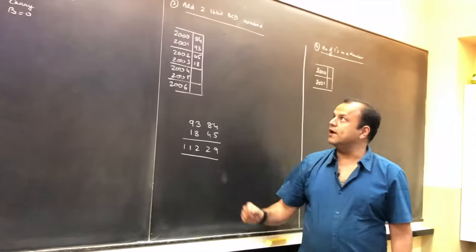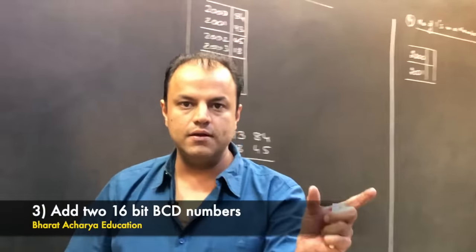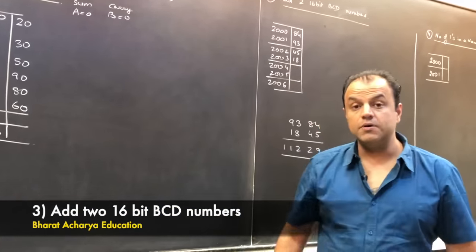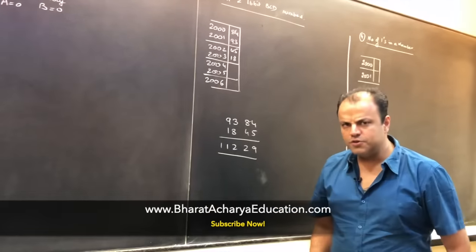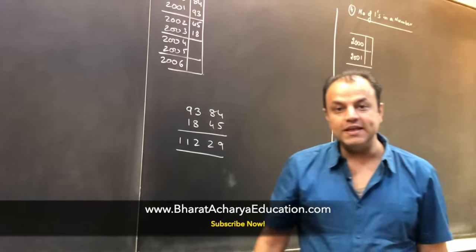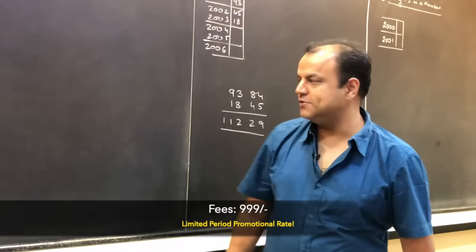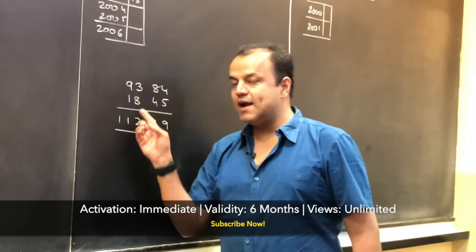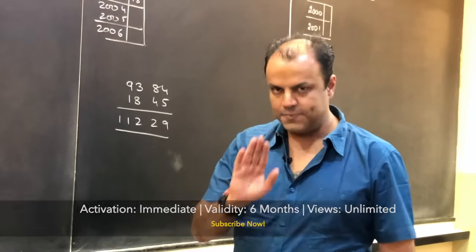The third program is to add two 16-bit BCD numbers. Adding 16-bit numbers is straightforward — add the lower bytes, then add the higher bytes with carry. But these are 16-bit BCD numbers, meaning decimal numbers entered into the system as if they are hexadecimal. You know which instruction is used here — DAA. The catch is DAA works only on 8-bit numbers, so you add in parts: first add the lower bytes and apply DAA, then add the higher bytes with carry and apply DAA again to get the correct final answer.